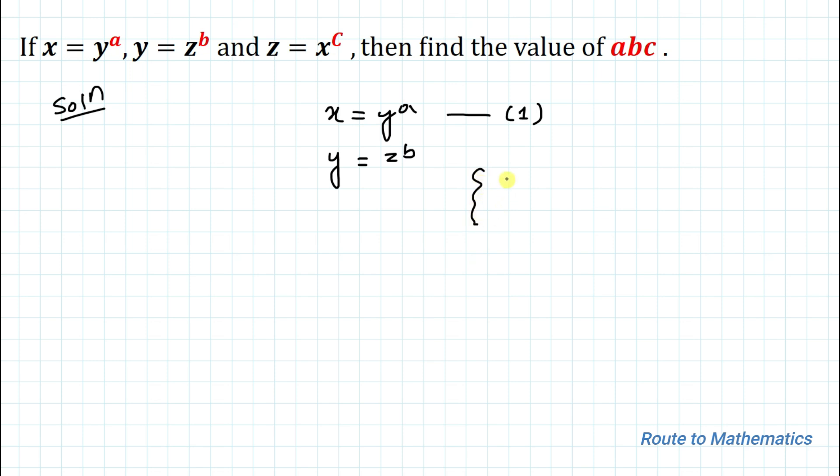Now I will apply an exponential rule: if p to the power q equals m, then we can write p equals m to the power 1 by q. Applying this rule here, we have z equals y to the power 1 by b. Let's call this equation 2.